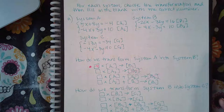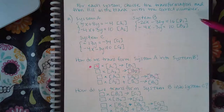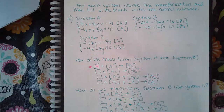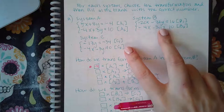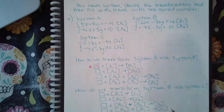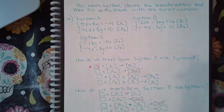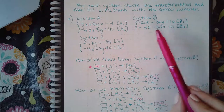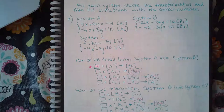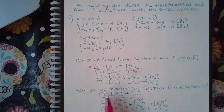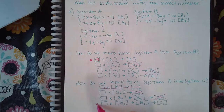The second question asks how we transform system B into system C. Again, identify which line changed. Line two is exactly the same in system B and system C, so line one changed. Importantly, notice that the x variable term completely disappeared in line one — and a variable term cannot disappear if all you're doing is multiplying by a constant.